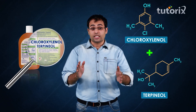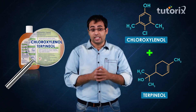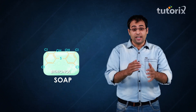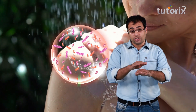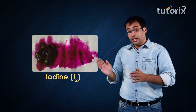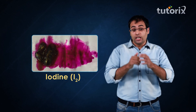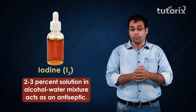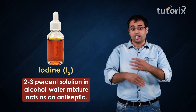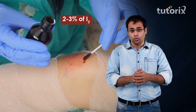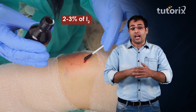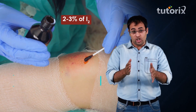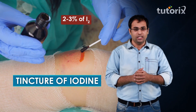Not only this, even antiseptic chemicals like bithional are added in soaps in order to kill germs present on your skin surface when you take a bath. Even iodine is a powerful antiseptic — its two to three percent solution in an alcohol-water mixture is used as an antiseptic to be applied on wounds. It is so important that it has been given a special name: tincture of iodine.